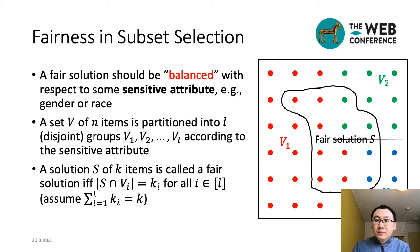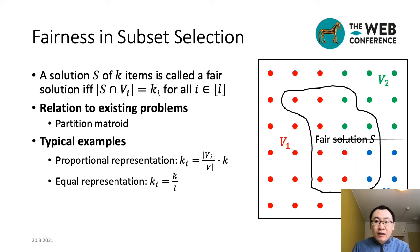The fairness issue we consider for subset selection is similar to the one for existing works on k-center and data summarization. It aims to find a balanced solution with respect to some sensitive attribute, like gender and race. We consider that the dataset V is partitioned into L groups according to the sensitive attribute, and we should guarantee that the solution S contains a specific number of items from each group. Our definition of fairness can be seen as a case of partition matroid constraint, and by setting different values of Ki, we can represent different concepts of fairness. For example, proportional representation can be used to preserve the proportion of each group in the ground set, and equal representation can be used to guarantee an equal number of items from each group.